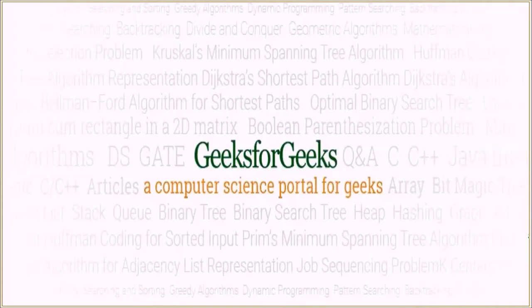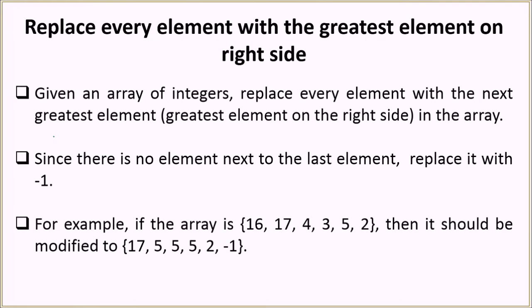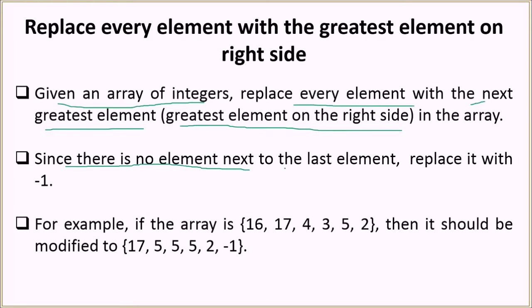Hello everyone and welcome to GeeksforGeeks. The problem we are going to see today is to replace every element with the greatest element on its right side. You will be given an array of integers and you have to replace every element with the next greatest element — that is, the greatest element on the right side of the array. Since there is no element next to the last element, we will replace it with minus one.